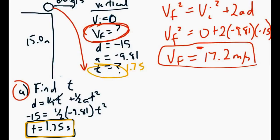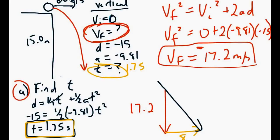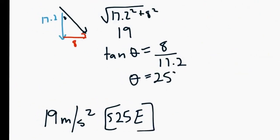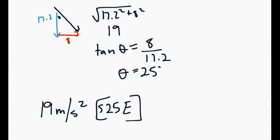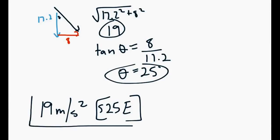If the question asks for the actual velocity and angle when it hits the ground, we have to be careful. We know it's going downward at 17.2 m/s, but it was also moving horizontally at 8 m/s. The ball is approaching the ground at an angle, so we use vectors. With 17.2 down and 8 horizontal, the hypotenuse gives us 19 m/s, and the angle is 25 degrees. So the final velocity is 19 meters per second at south 25° east.